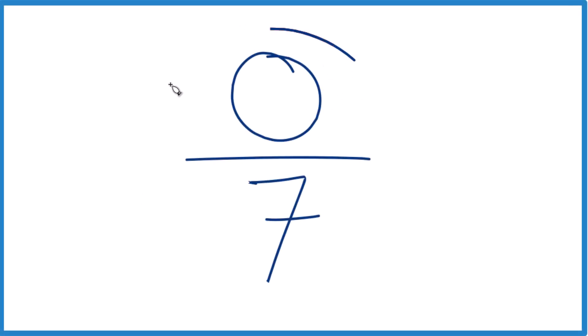So if you need to figure out what 0 over 7 is equal to, how we simplify this here, here's how you do it. So 0 over 7, 0 divided by 7.